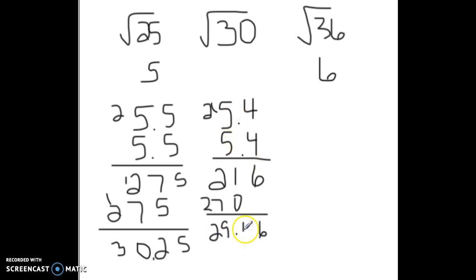So 5.4 was too low and 5.5 was too high. But which one of these two numbers right here is closer to 30? Well, my guess is going to be 30.25. So I would estimate the square root of 30 is 5.5 if you're estimating to the nearest tenth.